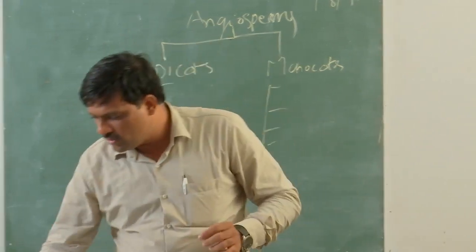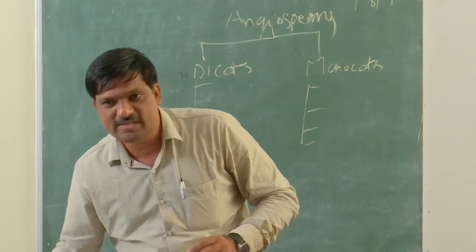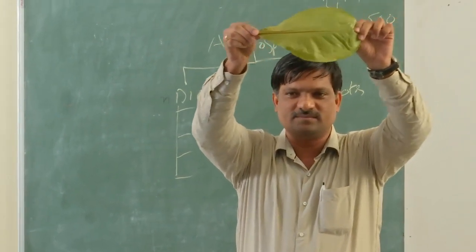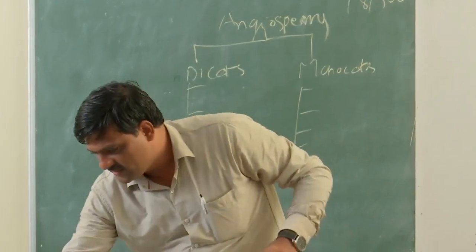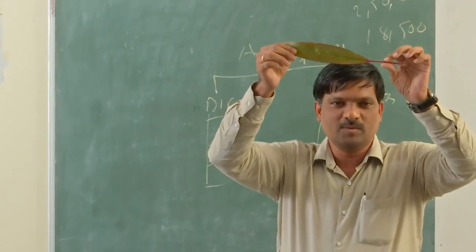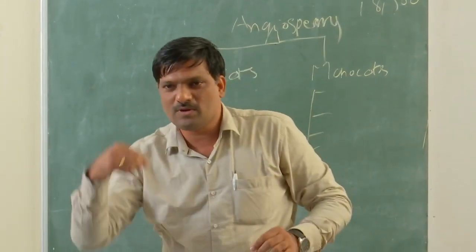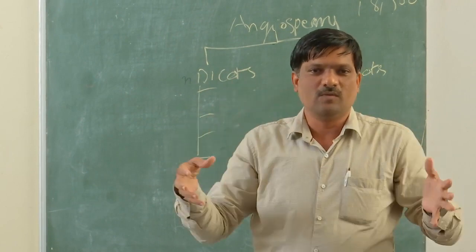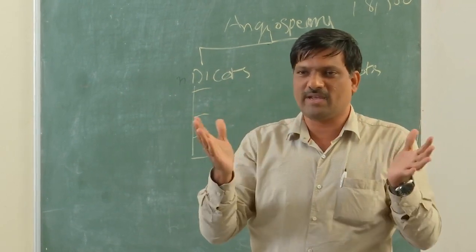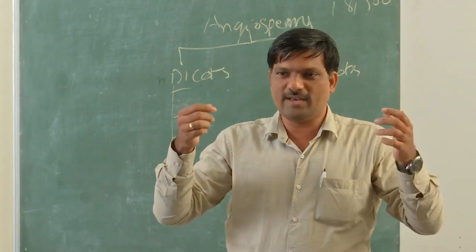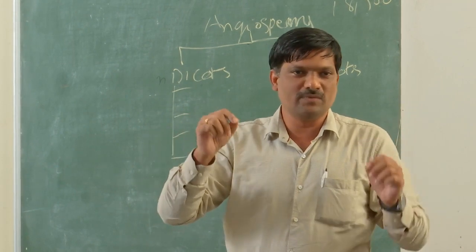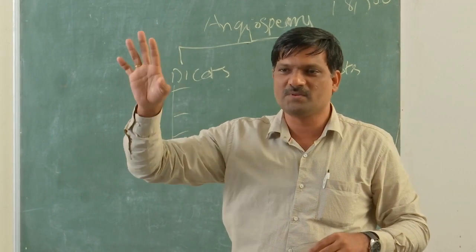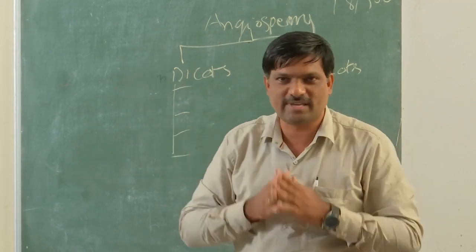Now I would like to show you only a small leaf — you should immediately say which it is, dicot or monocot. [Students answer: dicot. Monocot.] For your assignment, tomorrow go and identify monocots and dicots from plants around you. Final question: is banana a monocot or a dicot? [Students: monocot.] Thank you very much.